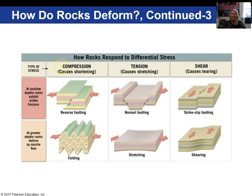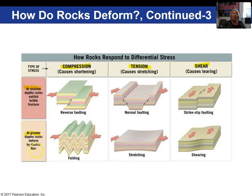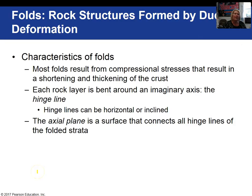This diagram shows the three types of stress — compression, tension, and shear — and the result of applying that stress at shallow depths versus great depths. At shallow depths, we get different types of faulting. At greater depths, we get folding, shearing, and stretching — ductile flow rather than brittle behavior. I want to introduce some geologic or rock structures now.